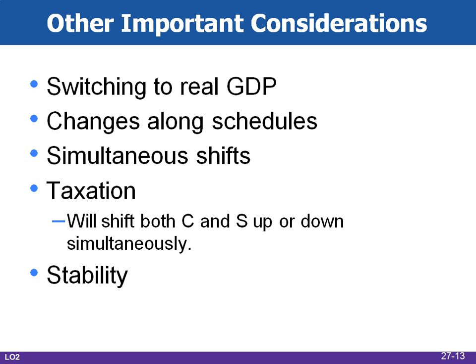Macroeconomic models focus on real domestic output or real GDP more than on disposable income. Movement from one point to another on a given schedule is a change in the amount consumed. A shift in the schedule is caused by non-income determinants of consumption. Consumption and savings schedules will always shift in opposite directions, unless the shift is caused by a tax change — taxes shift both spending and savings in the same direction. Lower taxes increase both spending and saving, while increases in taxes reduce both. Economists believe consumption and savings schedules are generally stable unless deliberately shifted by government action.